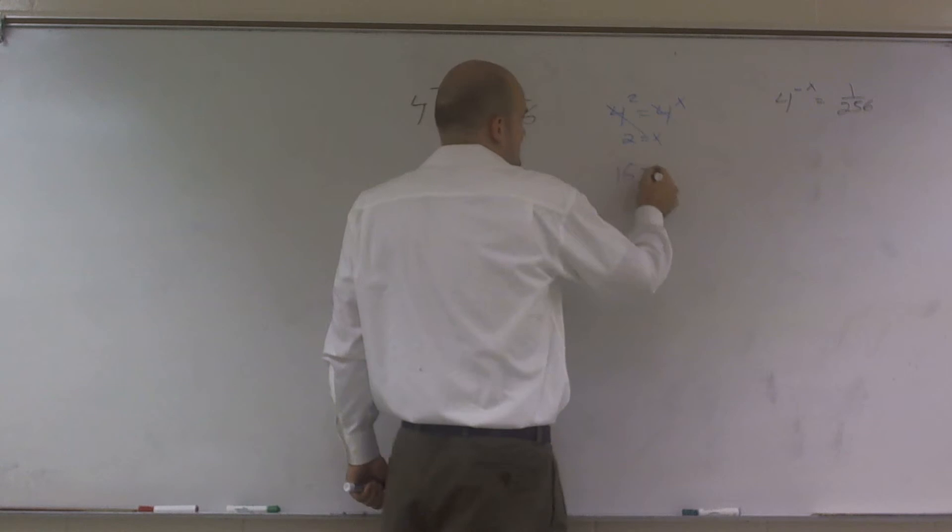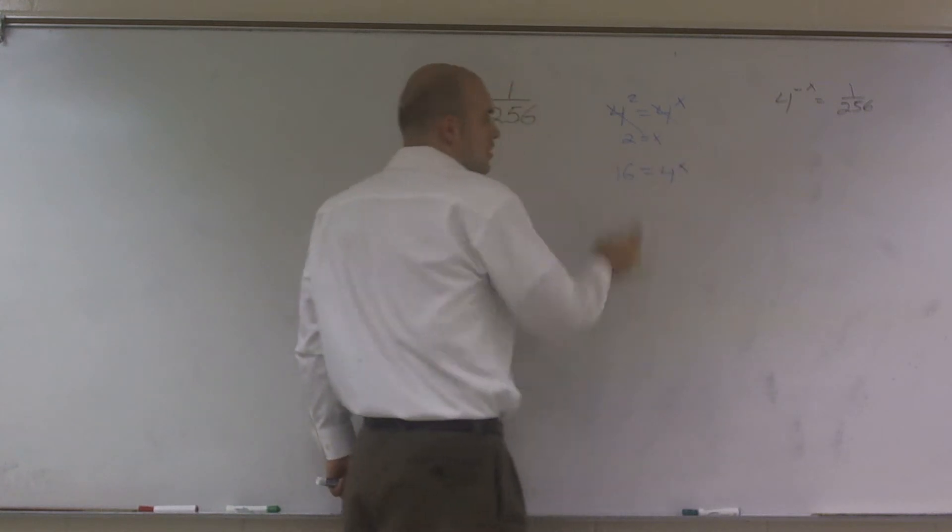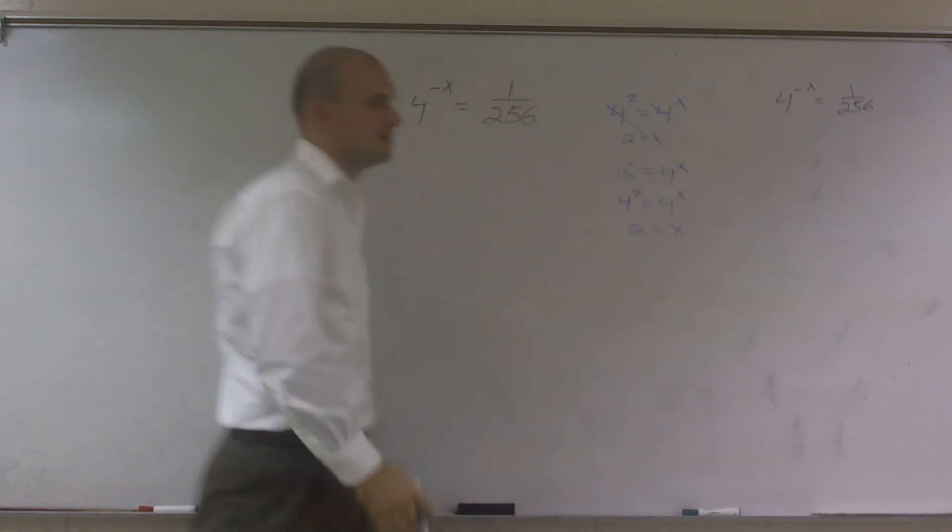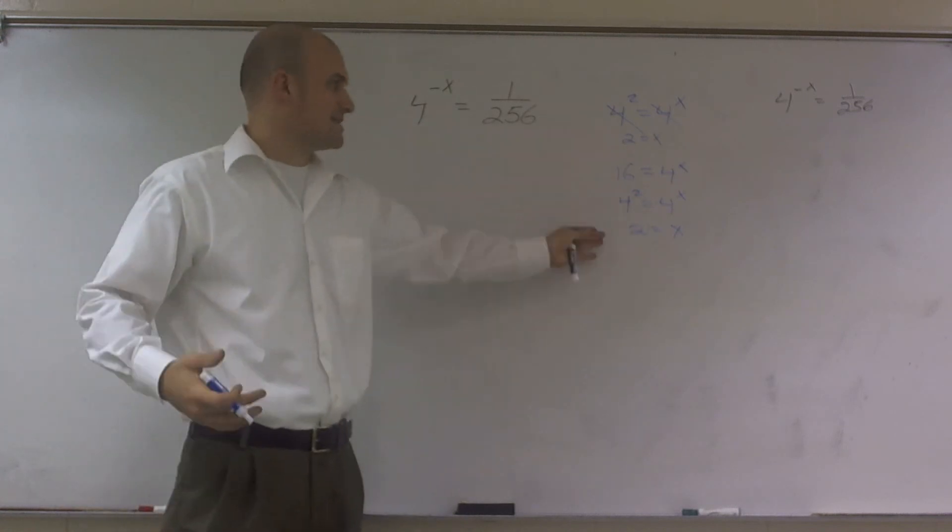What if I had 16 equals 4 to the x? Well, I can manipulate that 16 and write it as 4 squared equals 4 to the x. Therefore, 2 is equal to x. That's a very basic example.